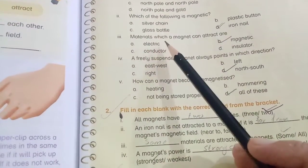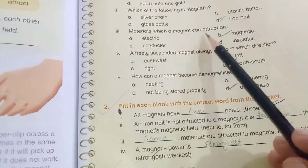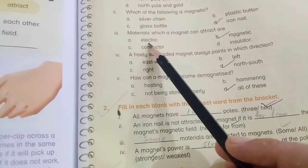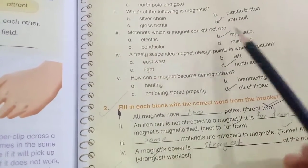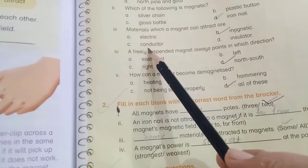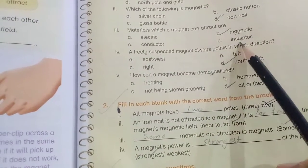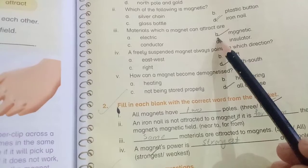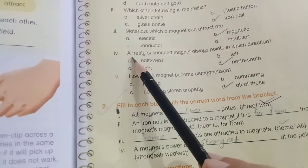Materials which a magnet can attract are: electric, magnetic, conductor, insulator. And B is the correct answer: magnetic.